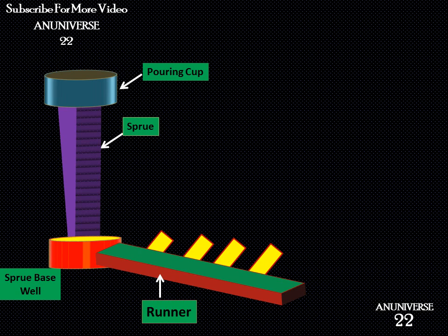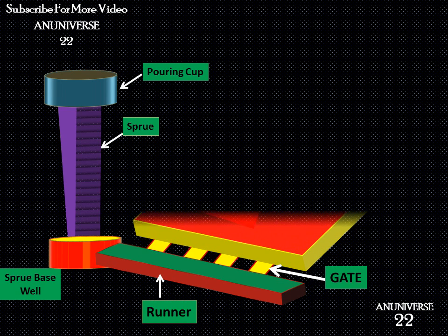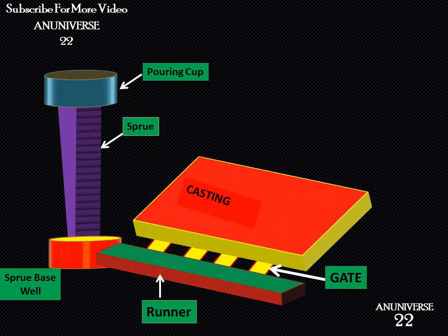The next part is the gate. These are the openings through which molten metal enters the mold cavity — the mold cavity being where we produce the casting. From the runner, the molten metal enters the mold cavity through the gate.